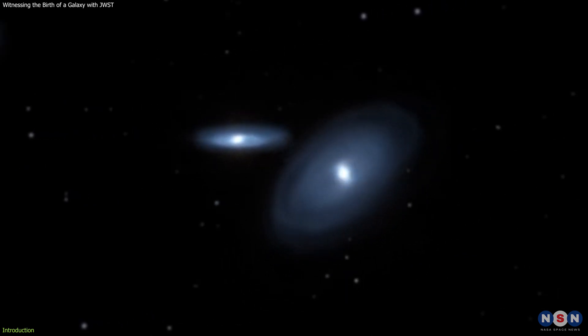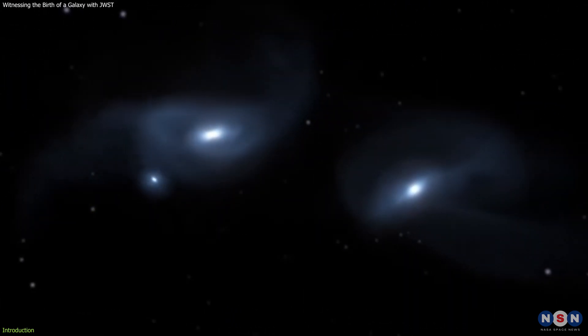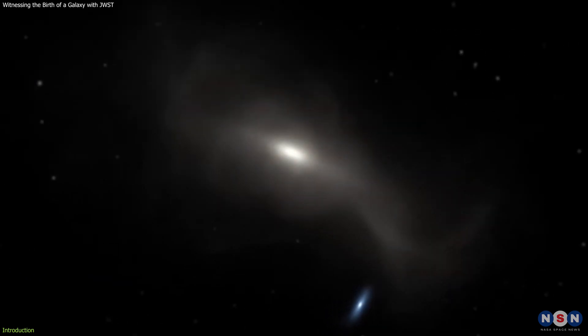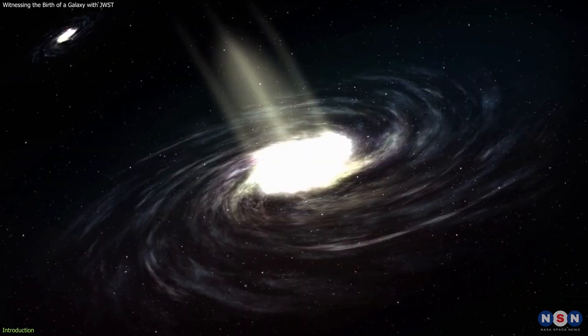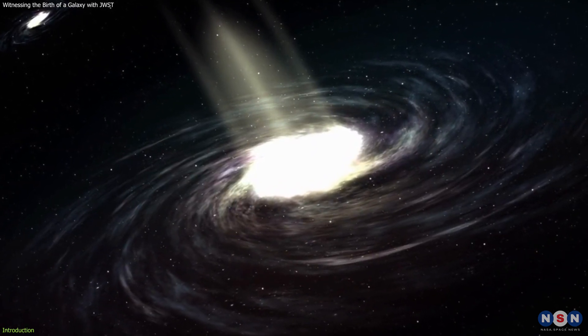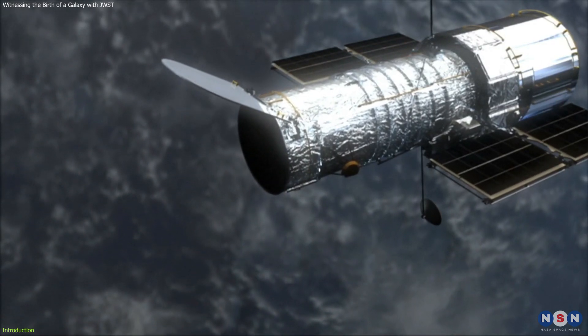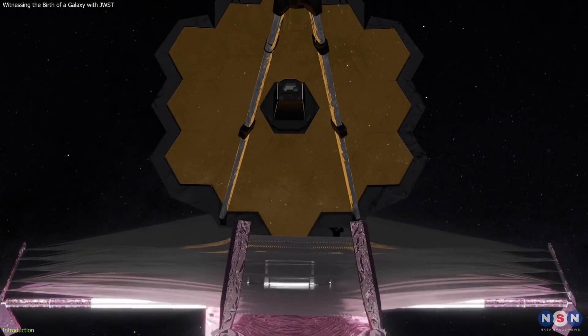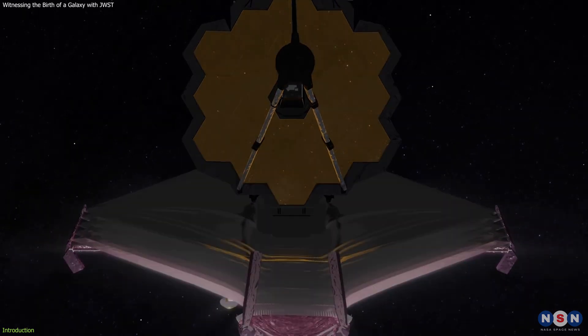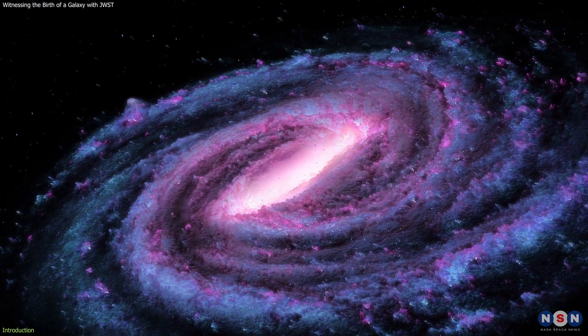They found a baby galaxy that is the result of a merger of two smaller galaxies that formed early in the history of the universe. This baby galaxy is so distant and faint that it was invisible to previous telescopes, but thanks to James Webb's incredible sensitivity and resolution, we can now see it in unprecedented detail.